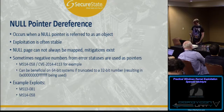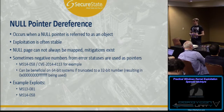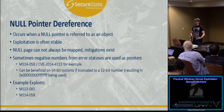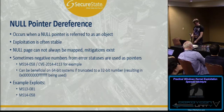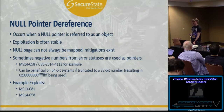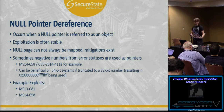Next up: null pointer dereference. This occurs when a null pointer is referenced as an object. Why this is bad is that if an attacker can map memory at that address, they can create a potentially malicious object at that address. Depending on what that object is, it will determine how it is actually being used. This can lead the attacker to need to know what types of objects they could put there and how it's being referred to — so exploitation can be a little more complicated.